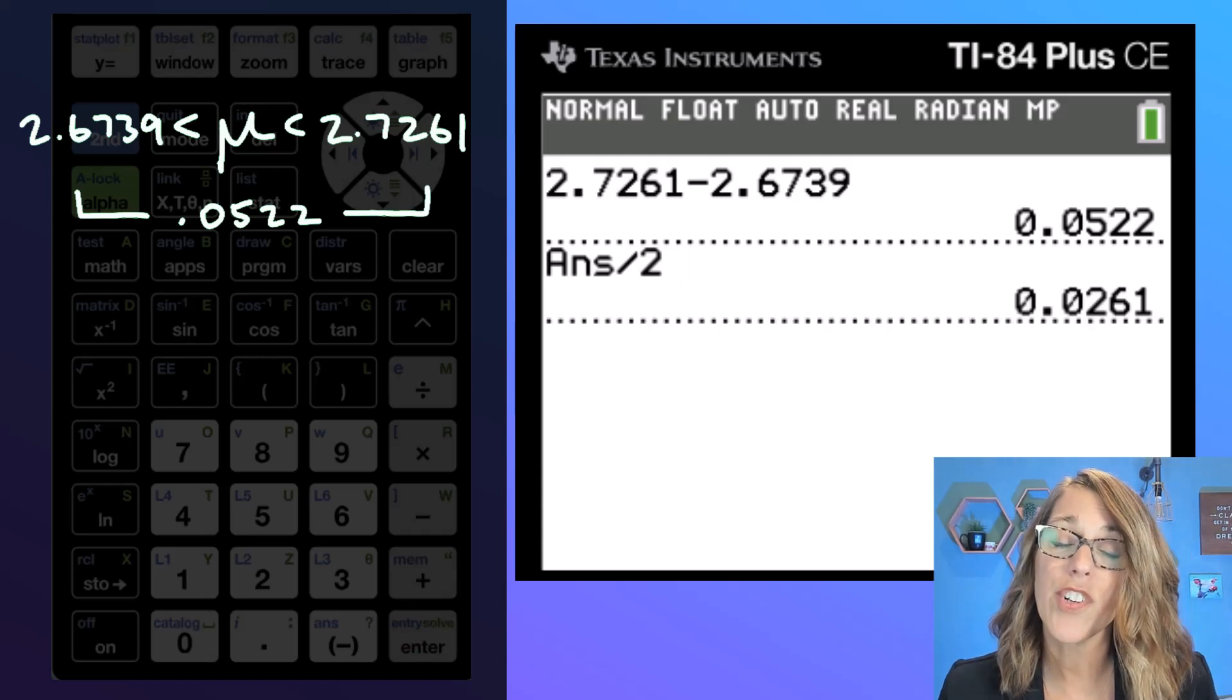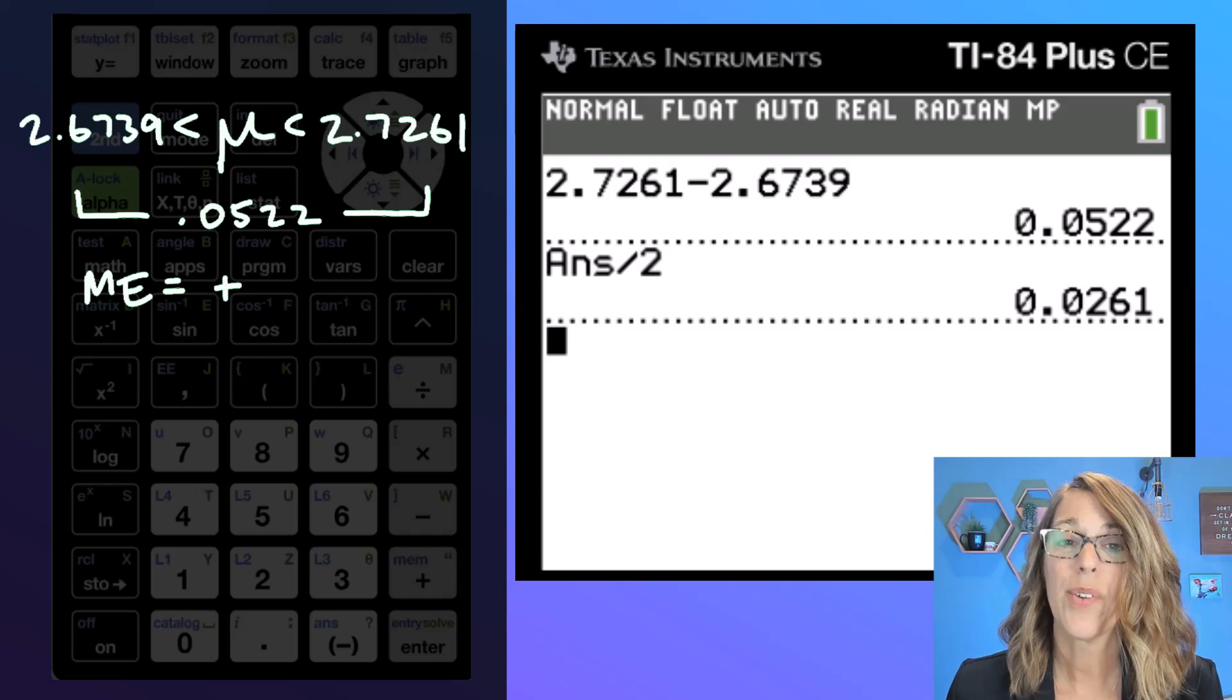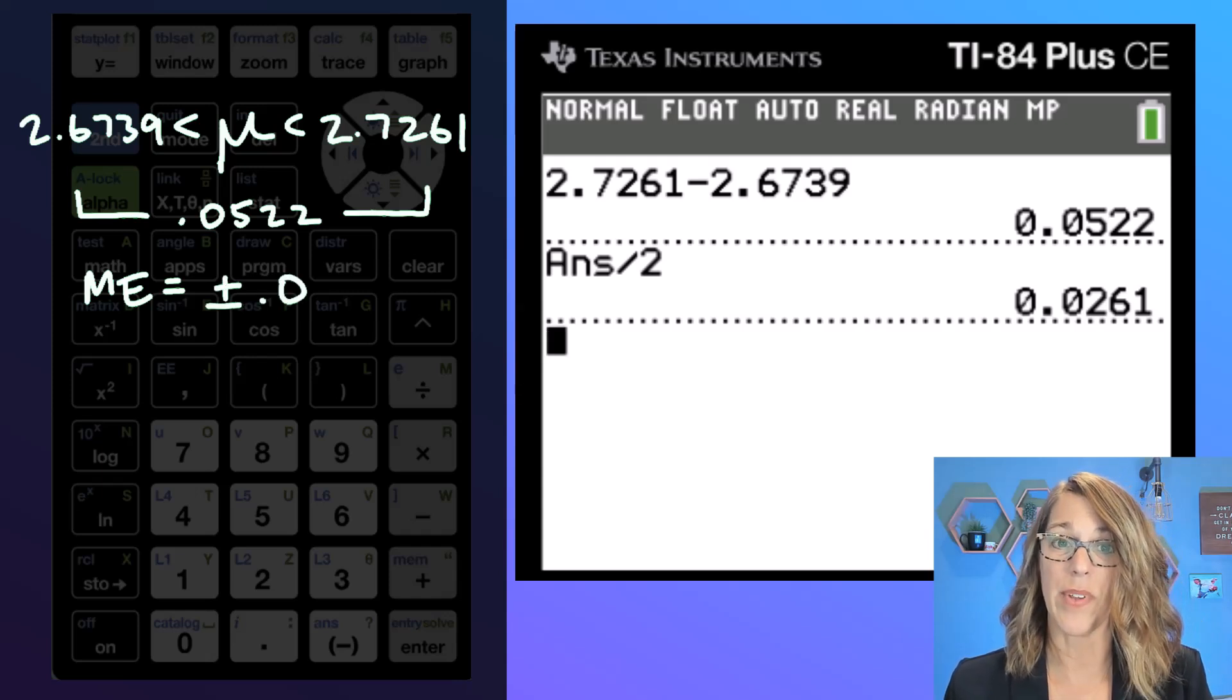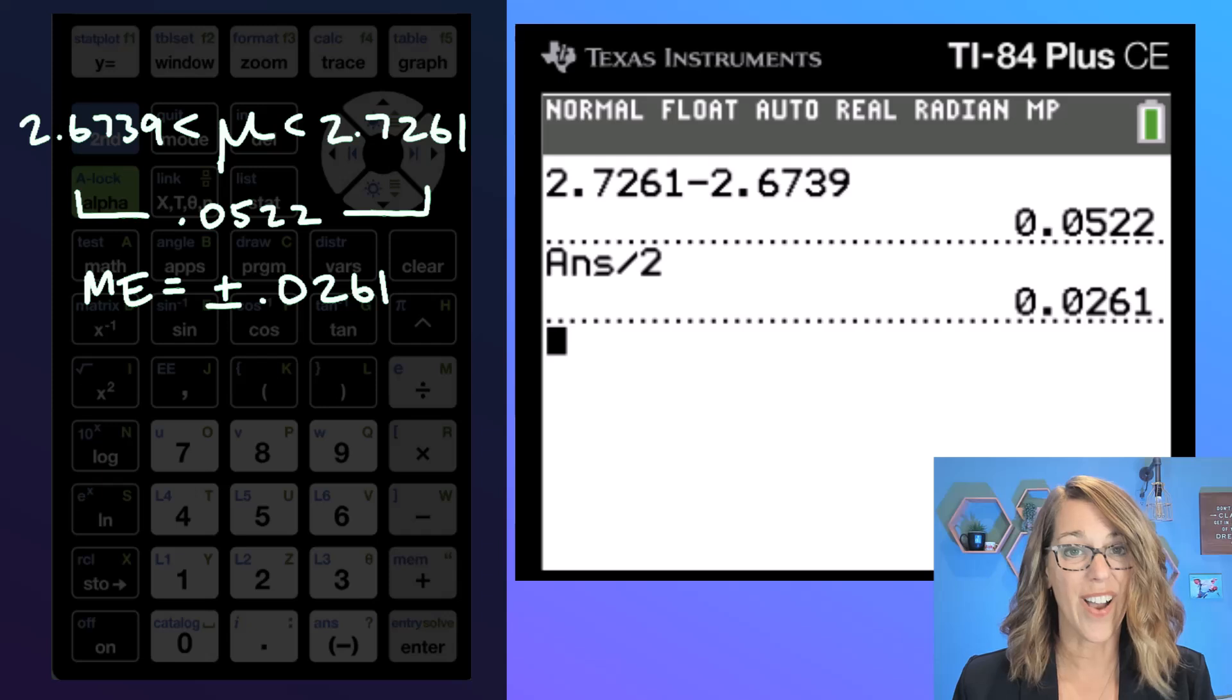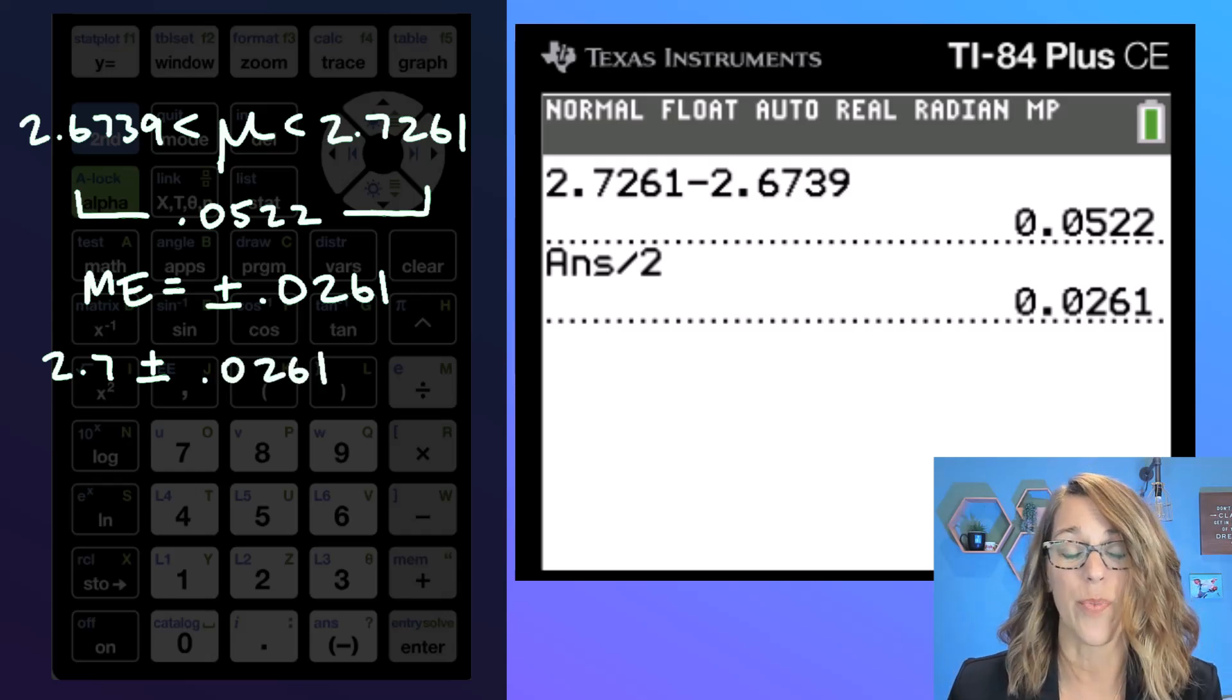So divided by two gives me a margin of error of 0.0261, which gives us a second way of describing our interval. We could say that confidence interval is our sample mean, which was 2.7 plus or minus our error of 0.0261.